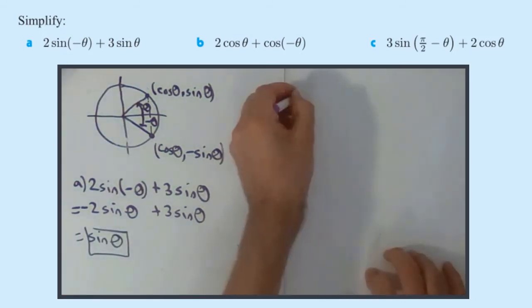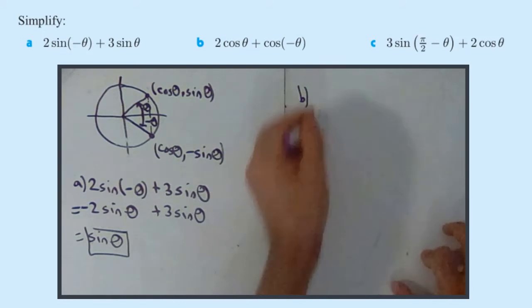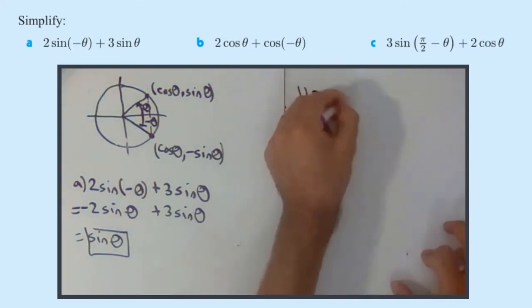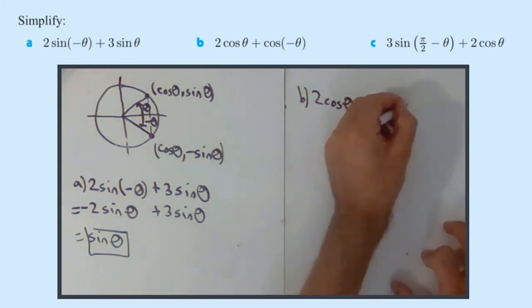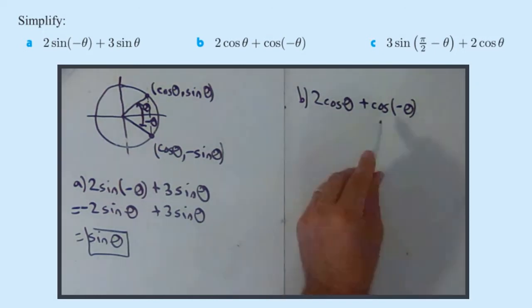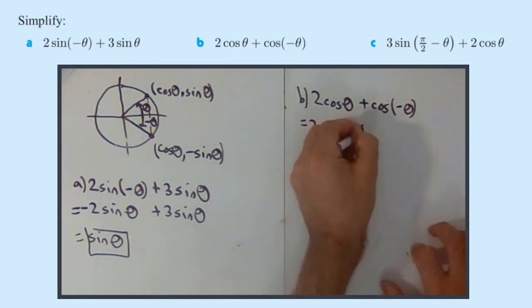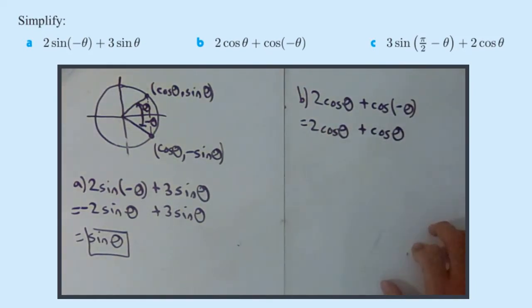Part B. Simplify 2cos(θ) + cos(-θ). So the 2cos(θ), you can't do anything with that, but the cos(-θ), remember, cos(-θ) is the same as cos(θ). So this ends up being 2cos(θ) + cos(θ), as cos(-θ) is cos(θ). 2cos(θ) + cos(θ) is 3cos(θ).